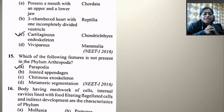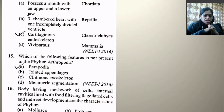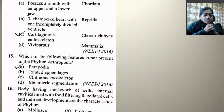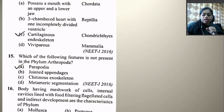Which of the following features is not present in phylum Arthropoda? Parapodia, jointed appendages, chitinous exoskeleton, and metameric segmentation — the last three are present in arthropoda, but not parapodia. Parapodia are present in annelids. Nereis is an example. Body having meshwork of cells, internal cavities lined with food-filtering flagellated cells, and indirect development are characteristics of Porifera — the right option is Porifera.